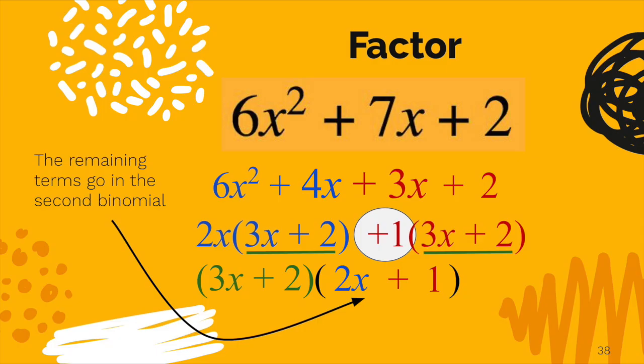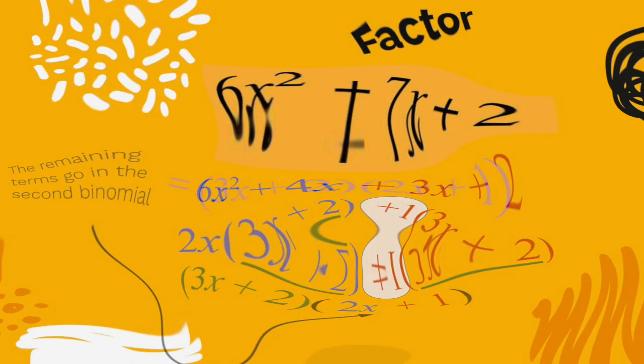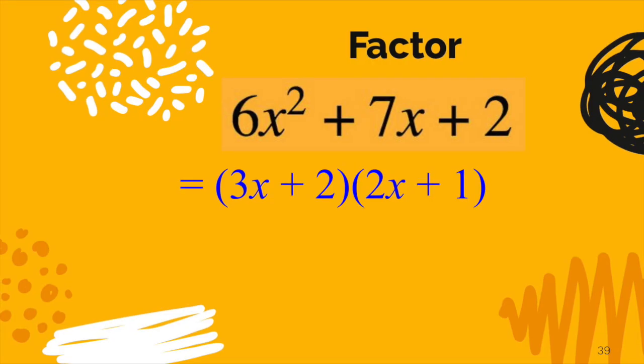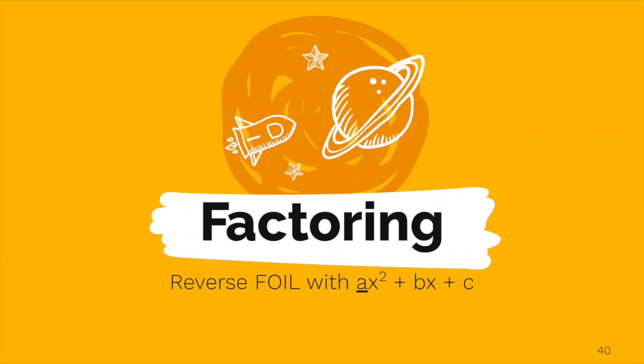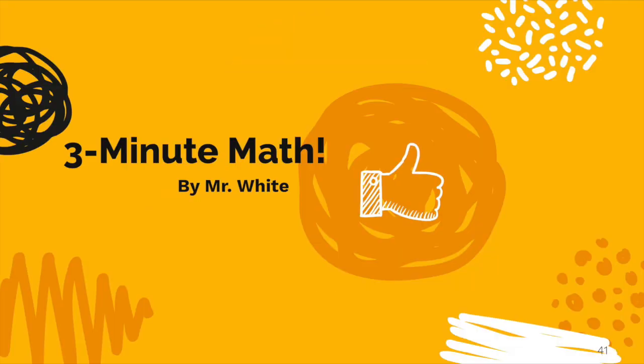Well, look at that. We now have the two binomials down at the bottom of the screen. So 6x² + 7x + 2 will split into 3x + 2 times 2x + 1. And this has been a quick primer on how to factor polynomials where the leading coefficient is not 1. This is Mr. White with 3-Minute Math.